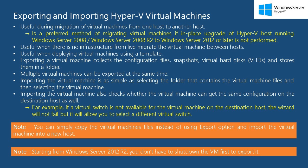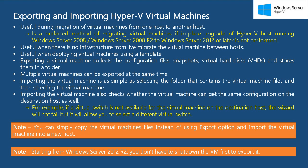Exporting a virtual machine stores all the VM files — such as configuration files, snapshots, virtual hard disks, and smart paging files — into a single folder, which can then be used to import the virtual machine. You can also select multiple virtual machines to export. While importing, it will check if the virtual machine can get the same configuration on the destination host. So if you have a virtual switch called switch1 on the source host and it is not available on the destination host, the wizard will prompt you to select a different switch.